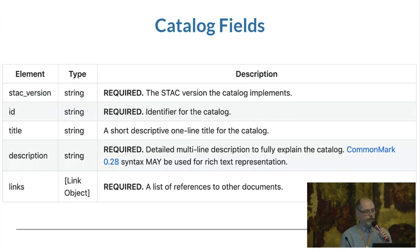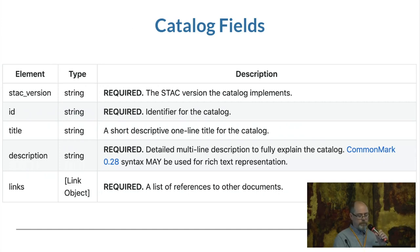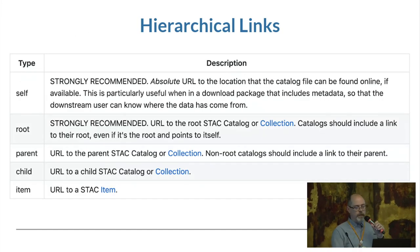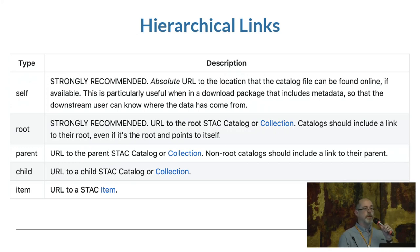The catalog looks like this. The main things required are a Stack version — you're going to see that in all the entities. The important thing is the ID and really the links. Links are a pretty important part of Stack. They're required. It's a way that we link together catalogs to collections to items, and items back to their parent catalog and parent collection. But they're not just for that — these are the hierarchical links that describe those relationships, but we also encourage judicious use of links. You might have an about page, documentation on the data set, a GitHub page of some code. You can provide links to anywhere.